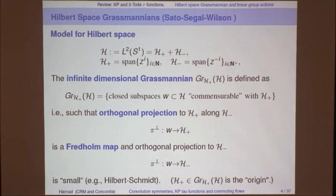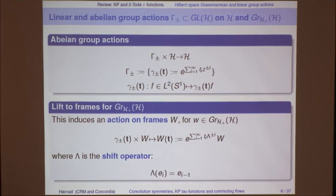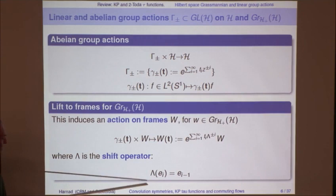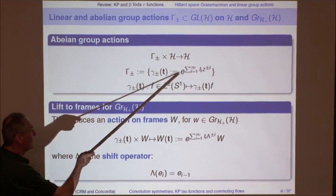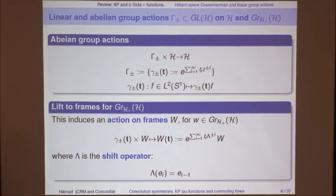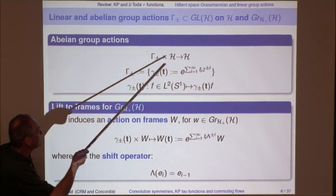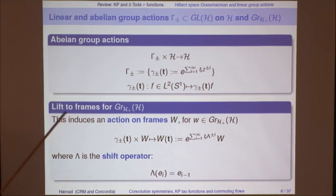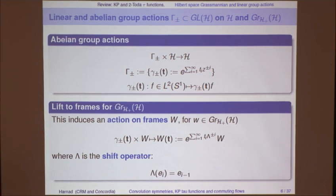Multiplication by z on this basis just shifts the monomials — so lambda is just the shift operator, upper triangular with zeros everywhere except one above the diagonal. The flow group is generated by multiplication of L² functions by positive or negative series in z, where the tᵢ's are the flow coefficients. It's obviously an abelian group. It acts on the Hilbert space and can be represented in terms of matrices via the doubly-infinite matrix — a very simple representation of this shift flow on Hilbert space.